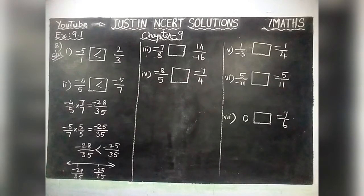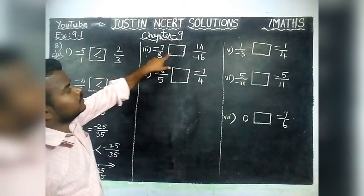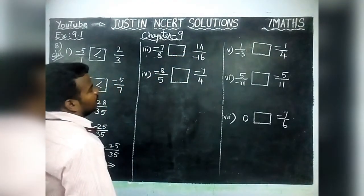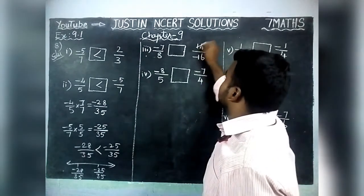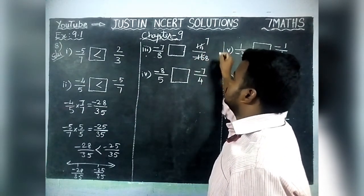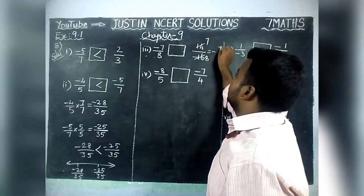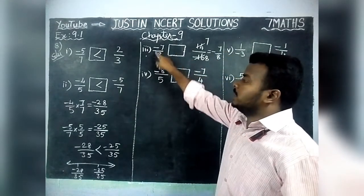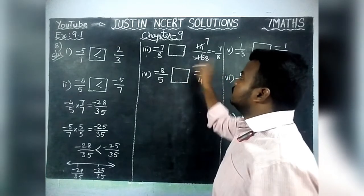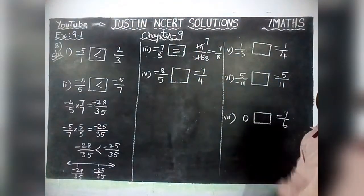Third question: left-hand side is minus 7 by 8, right-hand side is 14 by minus 16. We have to simplify: 7 twos are 14 and 8 twos are 16, so this can be written as minus 7 by 8. Left-hand side we have minus 7 by 8 and right-hand side also minus 7 by 8. Therefore, these two are equal — left-hand side is equal to right-hand side.